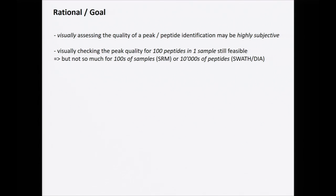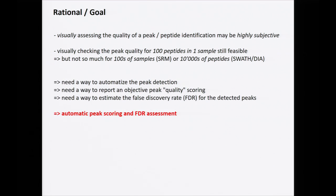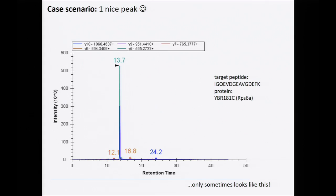The question is also about scale. If you're checking a few peptides in a few samples, it's manageable. But when you scale up your SRM measurements to hundreds of patient samples in a cohort, or if you're doing DIA analysis with tens of thousands of peptides in a single file, visual inspection becomes very difficult. We've implemented different ways to automatize peak detection, report objective quality scoring, and estimate the false discovery rate of your peak detection for peptide identification.